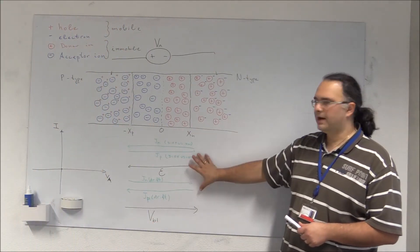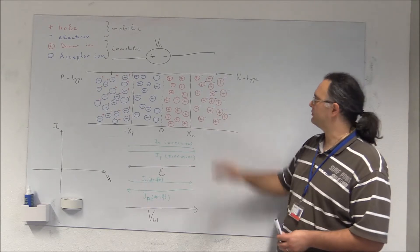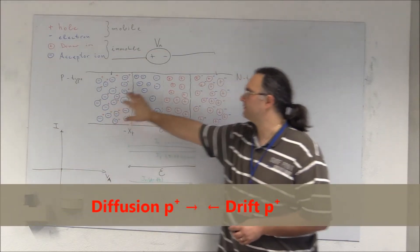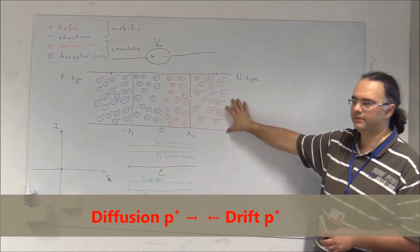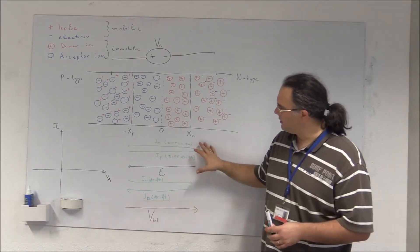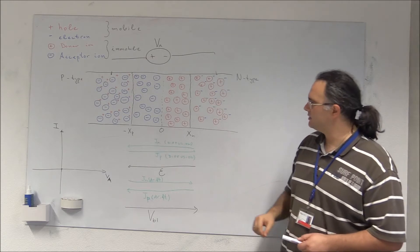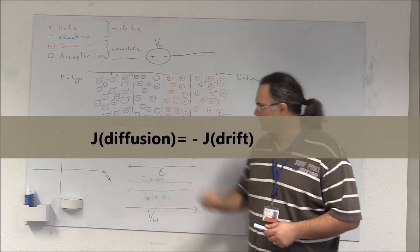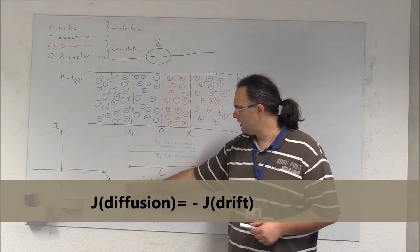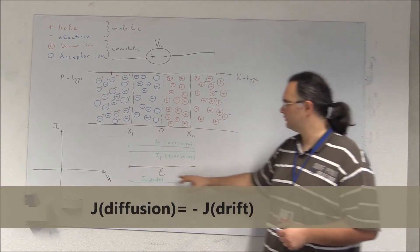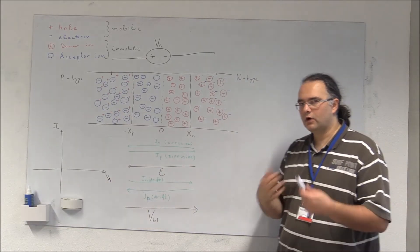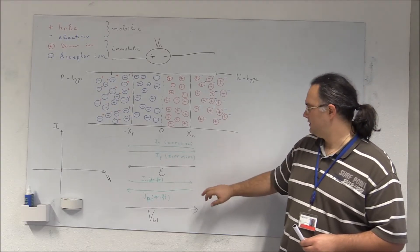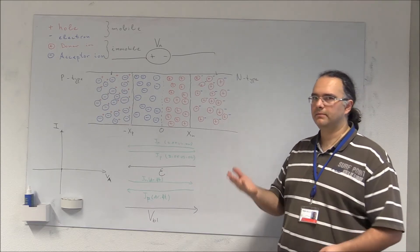This balance holds in thermal equilibrium for both electrons diffusing from the N-type to the P-type, and holes diffusing from the P-type into the N-type. So for the electrons, the diffusion current and the drift current must be exactly balanced.